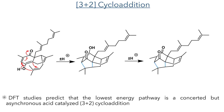The other mechanism is a [3+2] cyclization, similar to the one seen in the George synthesis of Peshawar Quinone. In this reaction, the bonds are formed in a concerted manner, and once again an enol is formed that can tautomerise back to a ketone. The researchers investigated these mechanisms using DFT, and these studies suggest that the lowest energy pathway is a concerted but asynchronous acid-catalyzed [3+2] cyclization.